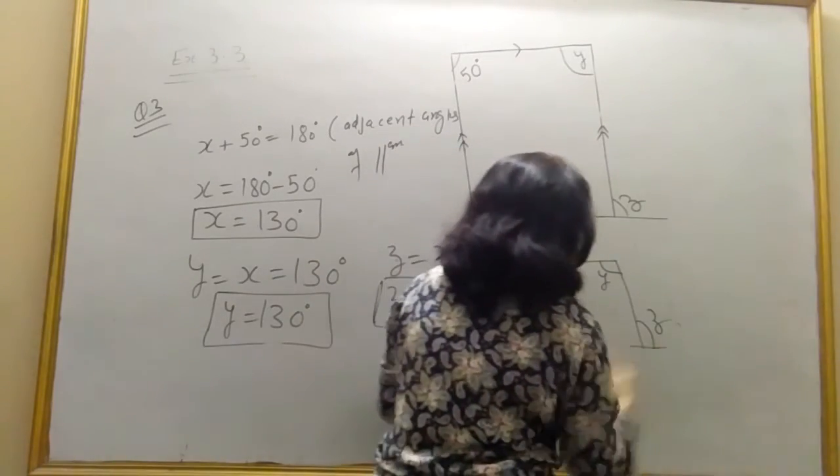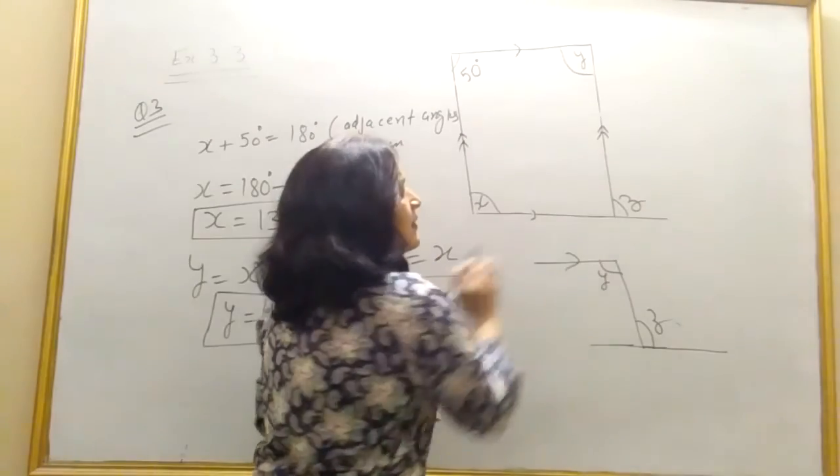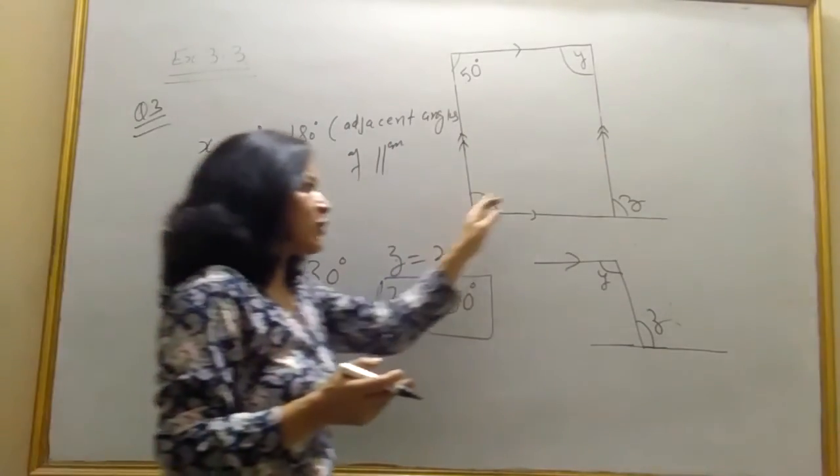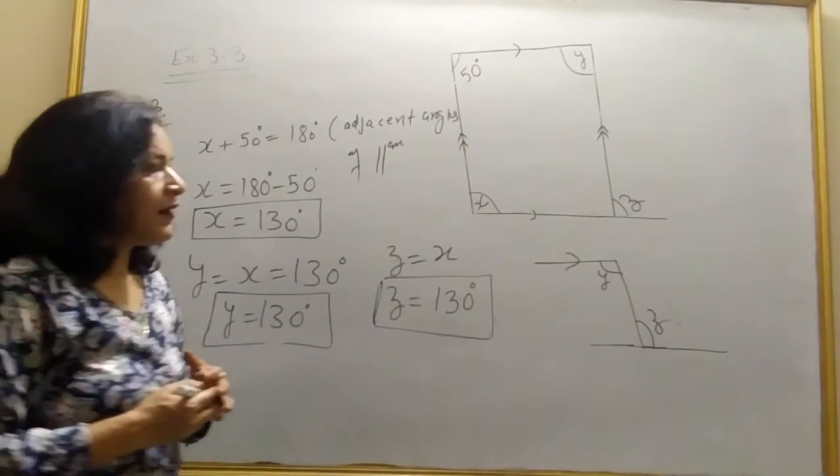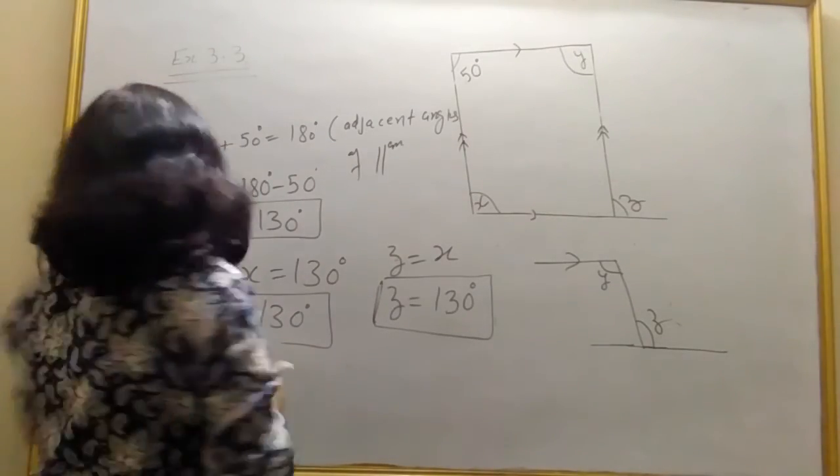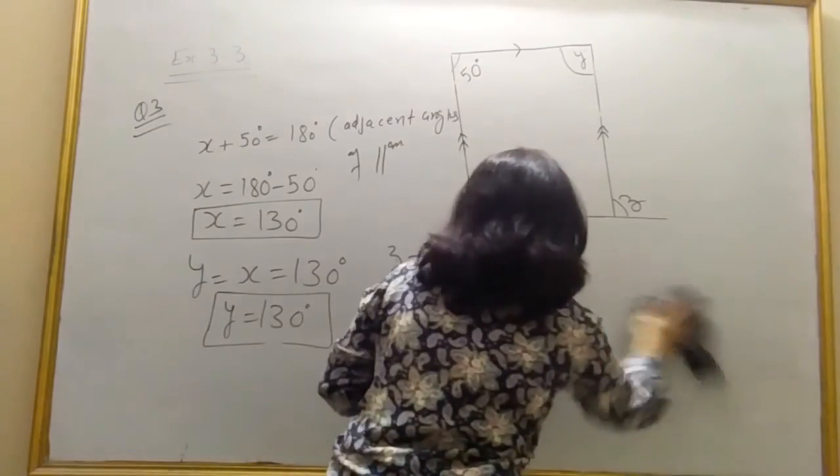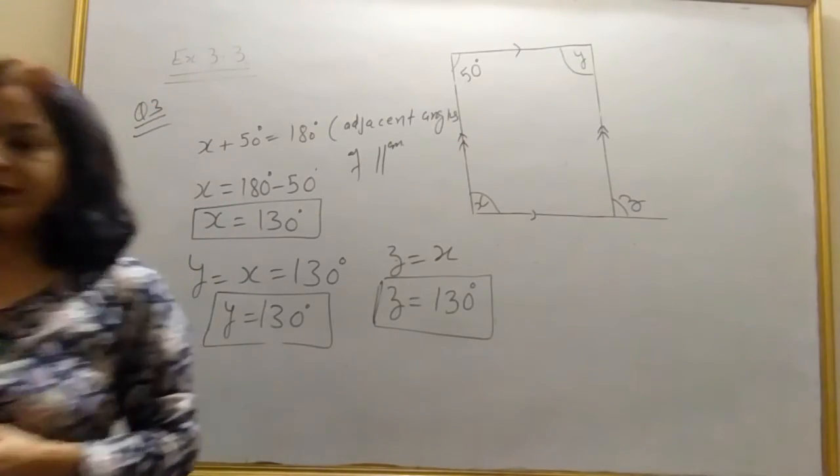They are making z. Y and z are alternate angles. You can do in any way, like this corresponding, or like this alternate angle. So all angles are equal to 130 degrees. Now we will solve next question, question number four.